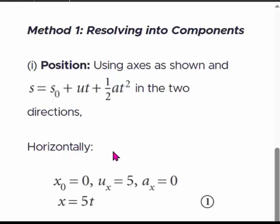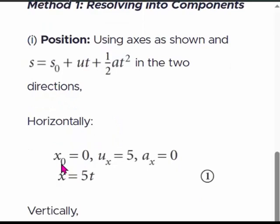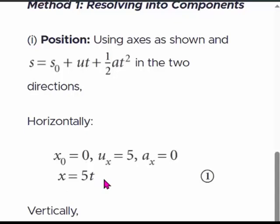Horizontally, s₀ is 0 and the horizontal velocity uₓ is 5 meters per second. The acceleration in the horizontal direction aₓ is 0 because gravitational acceleration is always vertical. Therefore, there is no horizontal acceleration. Since s₀ is 0 and aₓ is 0, when we substitute the values, the horizontal displacement x becomes simply x = 5t. This is our first equation.